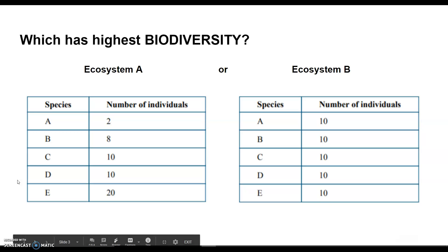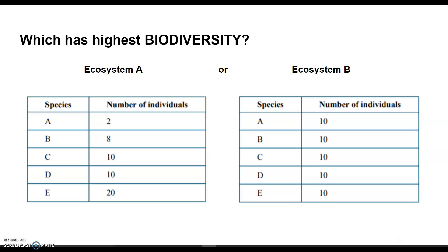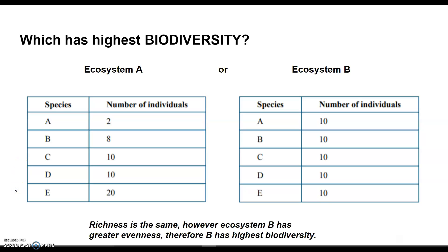For example, I could ask which ecosystem has greater biodiversity. If you look at ecosystems A and B, both have five different species. However, ecosystem B has greater evenness among those five species and therefore ecosystem B would have the highest biodiversity.